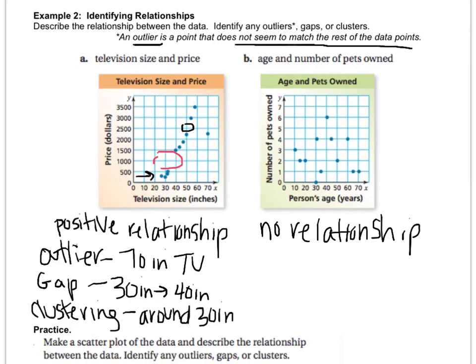For example, in the television example, I can give you a television size, and you can probably predict where along the line it's going to land. If I tell you that I'm 48 years old, you can't necessarily determine what my number of pets is going to be.